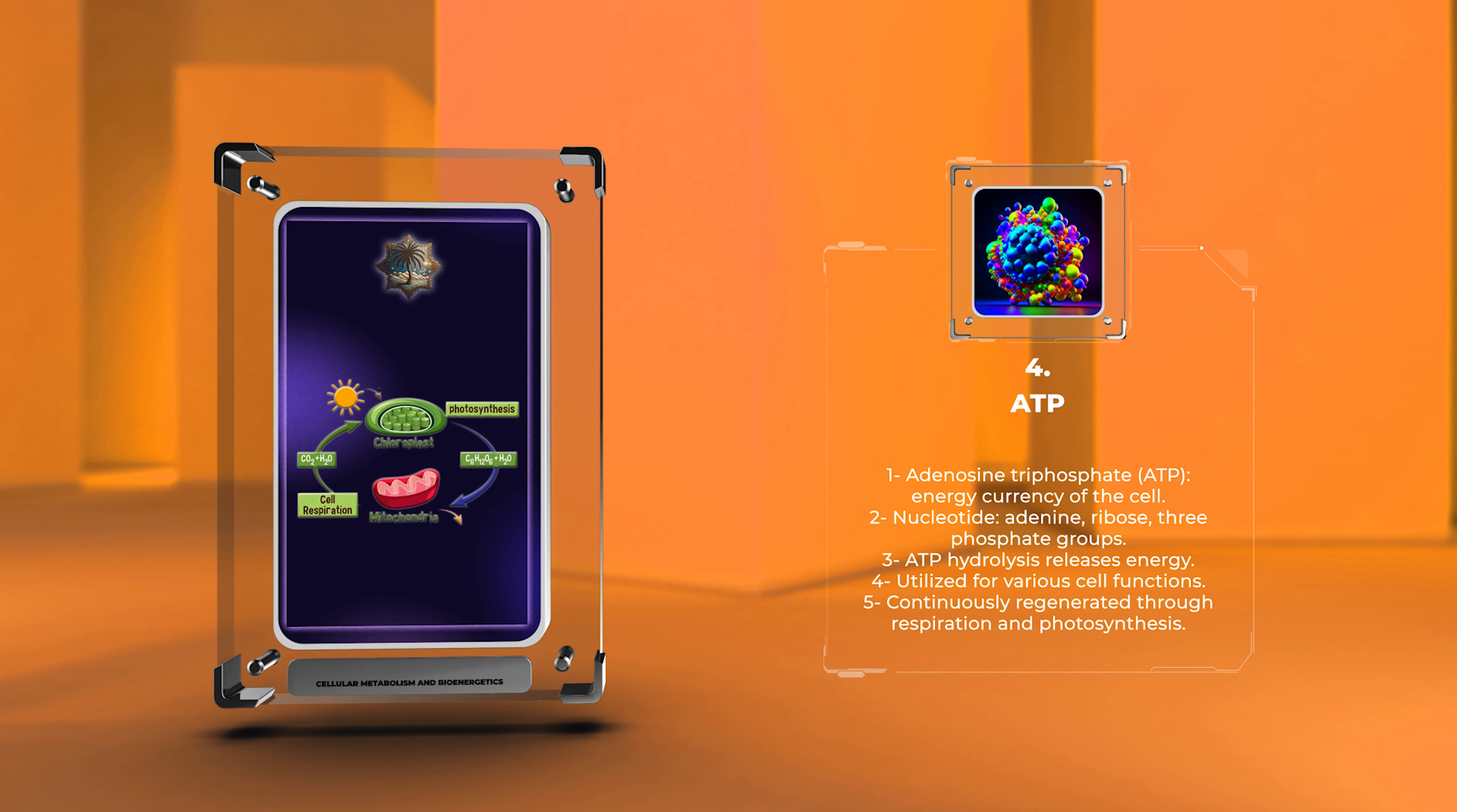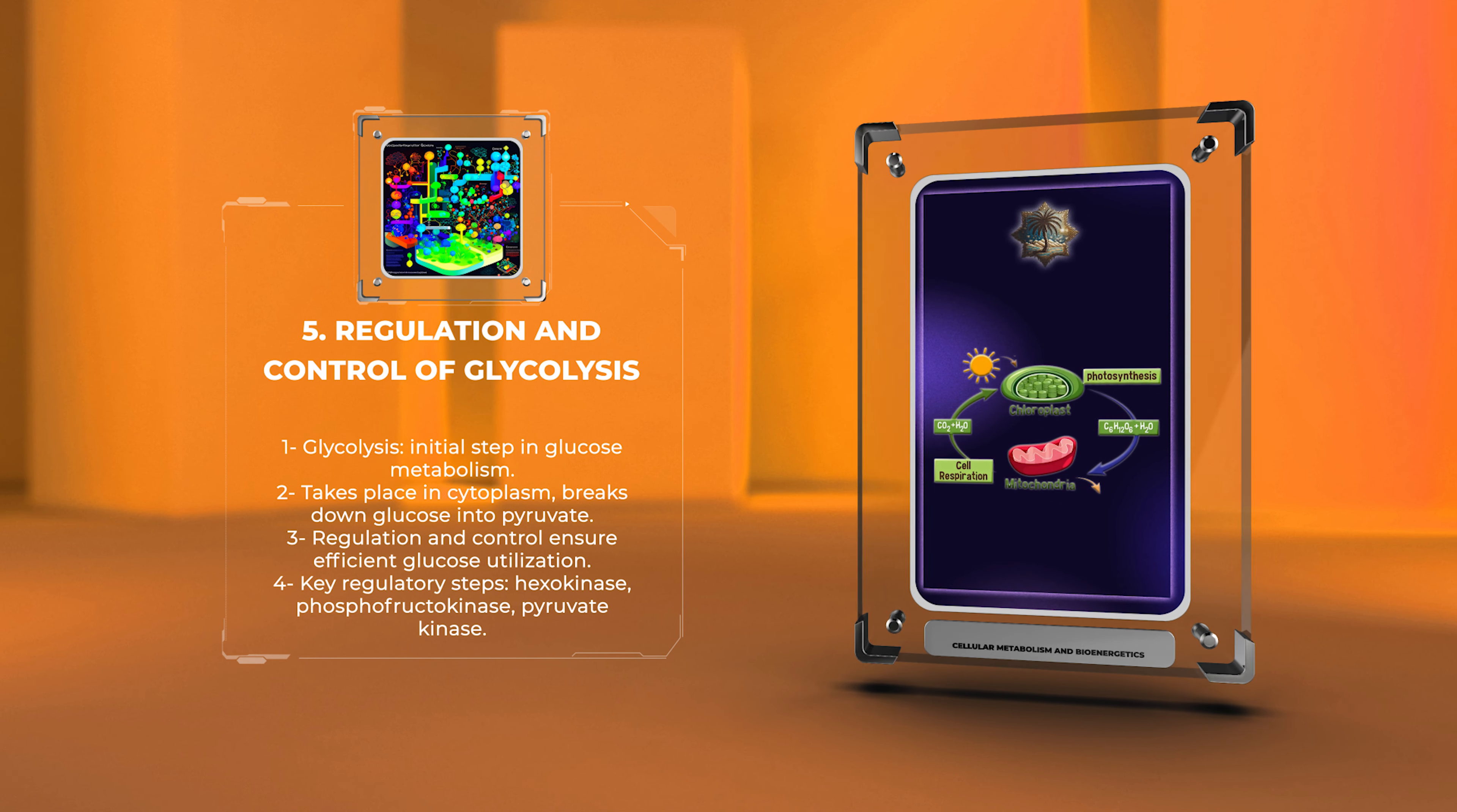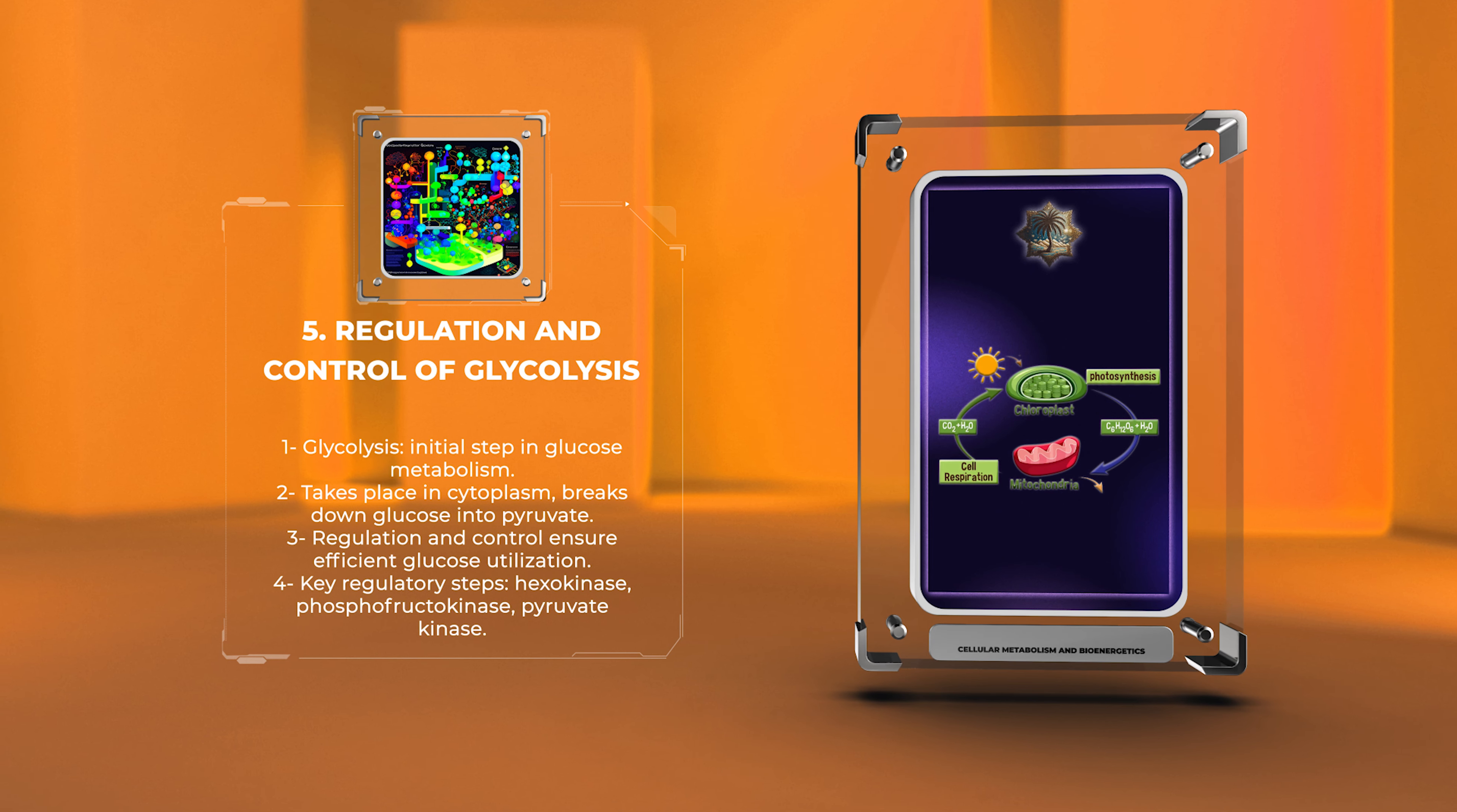ATP is continually regenerated through cellular respiration and photosynthesis. Glycolysis is the initial step in glucose metabolism. It takes place in the cytoplasm and involves the breakdown of glucose into pyruvate. The regulation and control of glycolysis ensure that glucose is efficiently utilized to produce ATP.